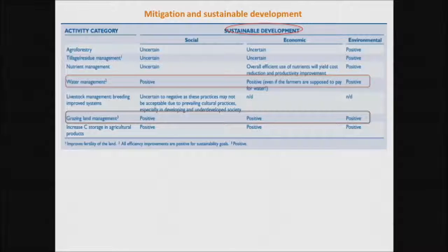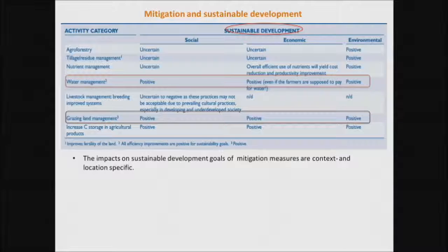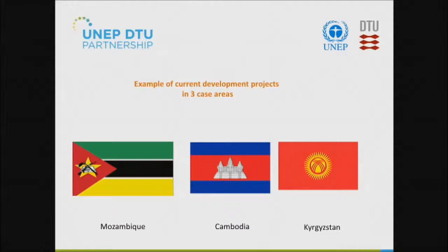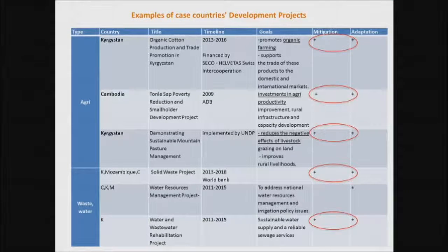This framework is helpful when making decisions between different actions in terms of their contribution to sustainable development — you can rank them. Of course, this is very context- and location-specific at the country level. Now, as promised, I will talk about ongoing national development projects in countries that are aligned with sustainable development, and assess whether they contribute to mitigation and adaptation as potential INDC components. The countries are Colombia, Cambodia, and Mozambique.